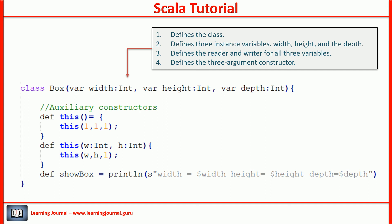Rest of the code is simple. We also define two auxiliary constructors. The auxiliary constructor name is always this. So, both of these are named as this. The first constructor takes no arguments. And the second constructor takes two arguments. There is one more rule for auxiliary constructor. The auxiliary constructor must start with a call to a previously defined auxiliary constructor or the primary constructor. In our example, both of the auxiliary constructors are calling the primary constructor. The first one is setting all values to 1. Whereas the second one is setting the depth as 1.